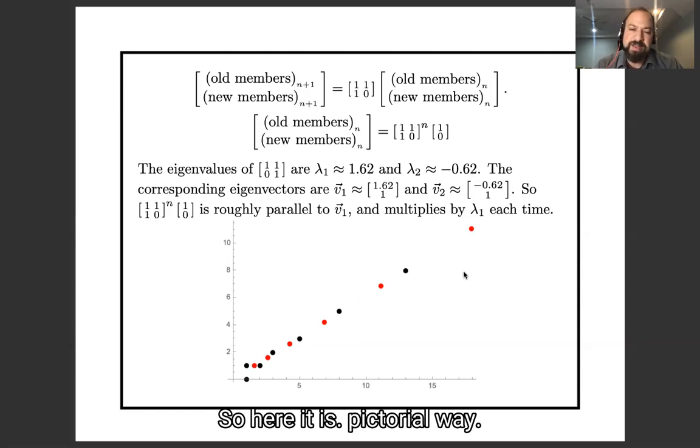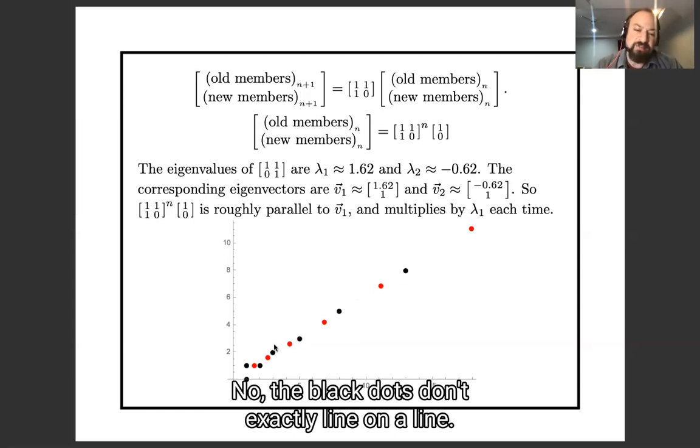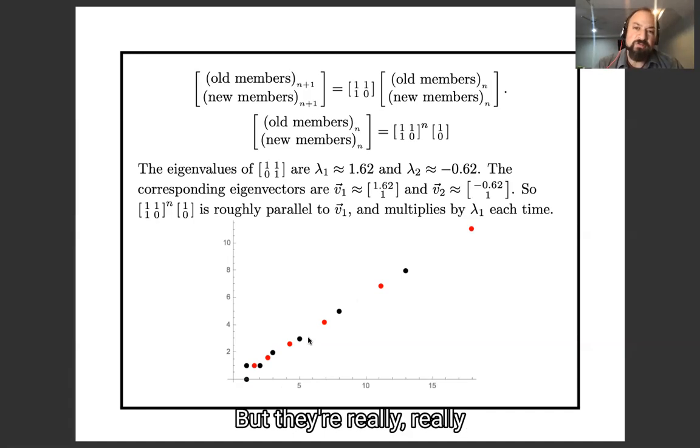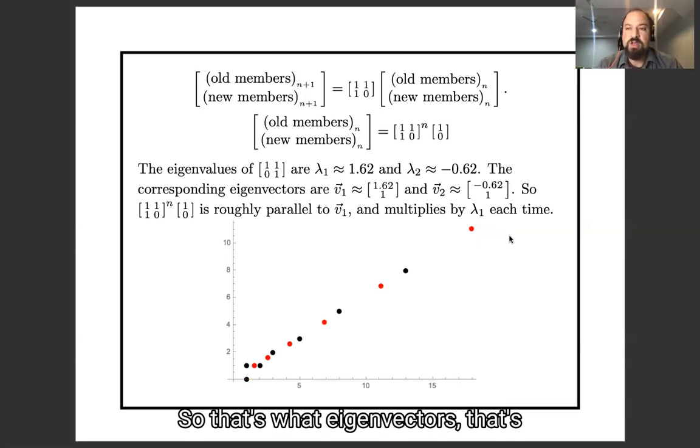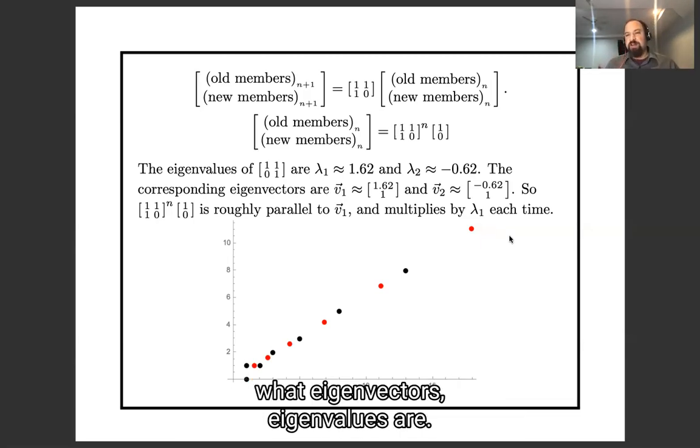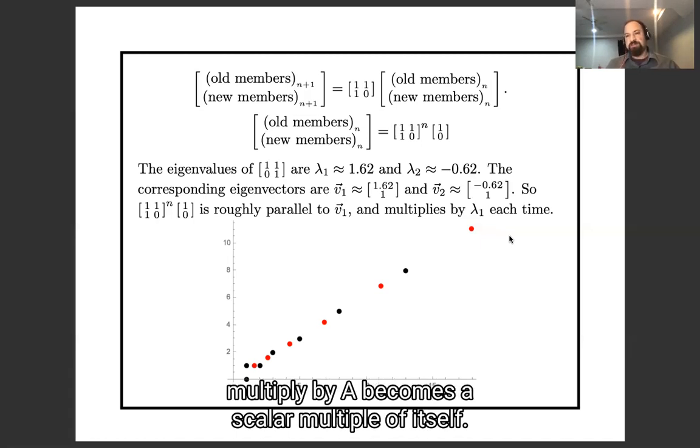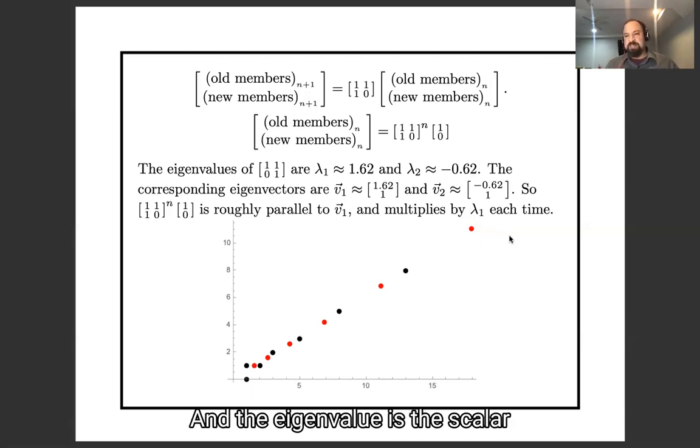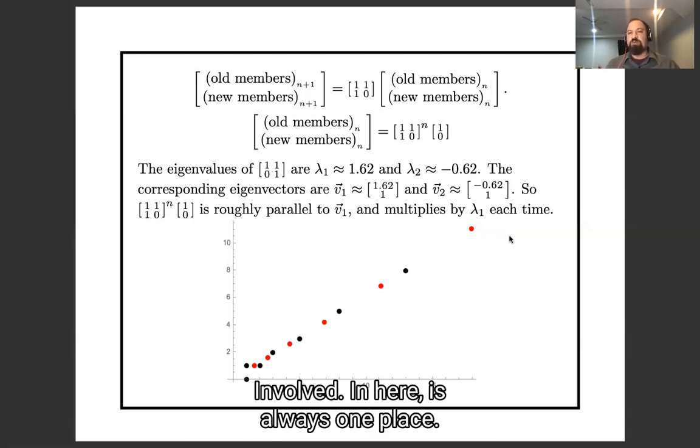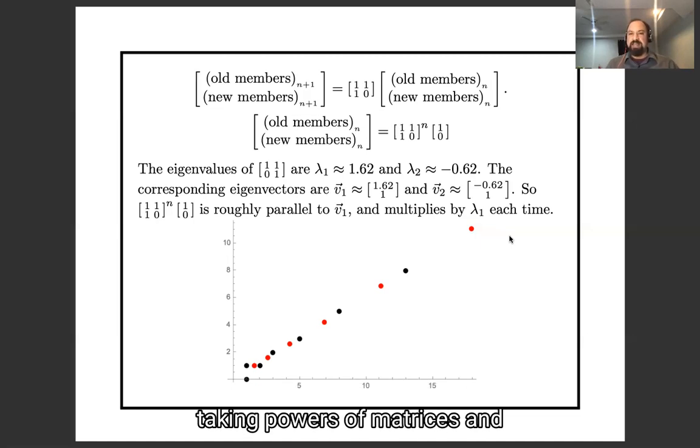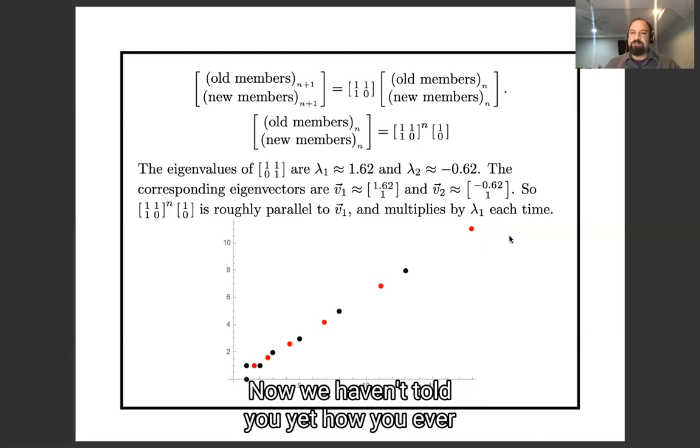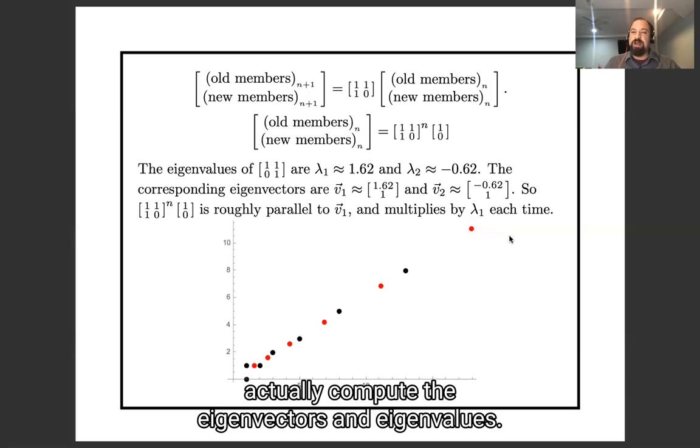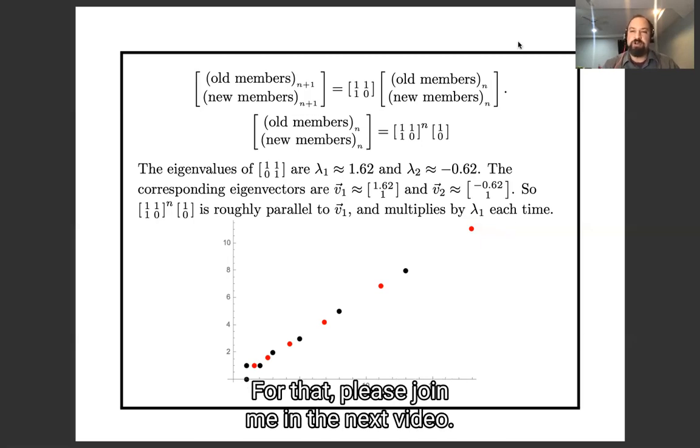So here it is pictorially. The black dots don't exactly lie on a line, but they're really, really close to it, because they're really close to growing like these red dots that do. So that's what eigenvectors and eigenvalues are. An eigenvector is a vector which, when you multiply it by A, becomes a scalar multiple of itself. And the eigenvalue is the scalar involved. Here's at least one place you see them. You see them whenever you analyze taking powers of matrices and asking what happens after you take a lot of powers. Now, we haven't told you yet how you would ever actually compute any eigenvectors or eigenvalues. For that, please join me in the next video.